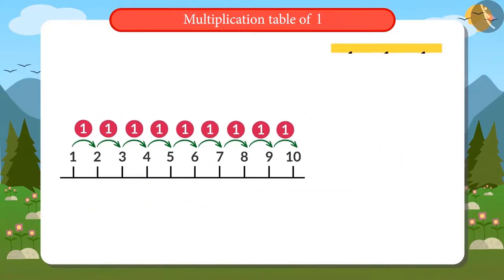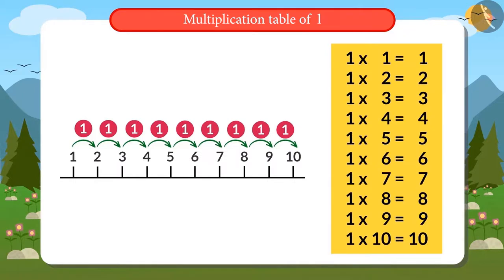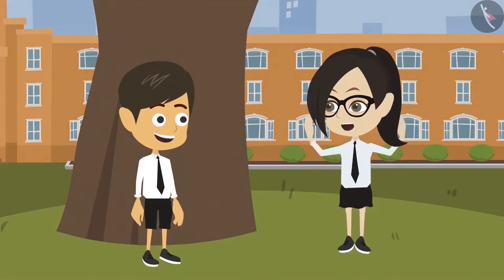And I will read out the table of one. 1x1 is 1, 1x2 is 2, 1x3 is 3, 1x4 is 4, 1x5 is 5, 1x6 is 6, 1x7 is 7, 1x8 is 8, 1x9 is 9, 1x10 is 10.